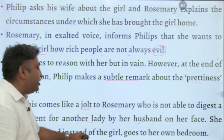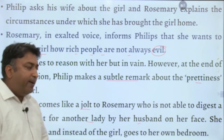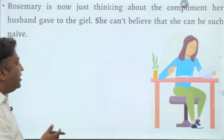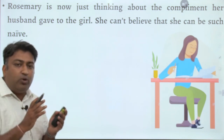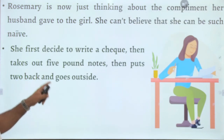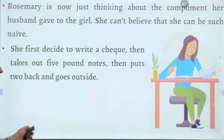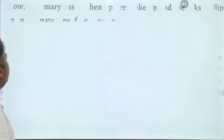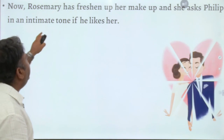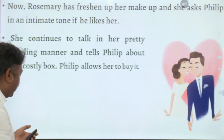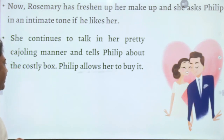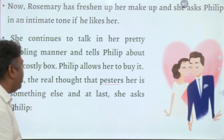Her feminine jealousy is activated. Rosemary leaves Philip and goes to her own bedroom, unable to stop thinking about the compliment her husband gave the girl. She cannot believe she allowed such a girl into her home in front of her husband. She first decides to write a check, then takes out five pound notes, puts two back, and goes outside. After half an hour she enters the library, informs Philip that the girl — Miss Smith — has gone, and freshens up her makeup.